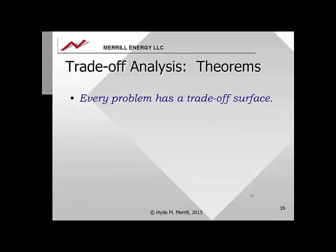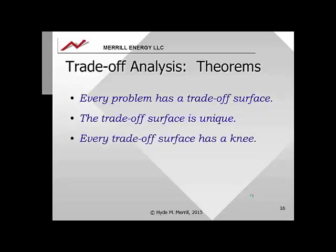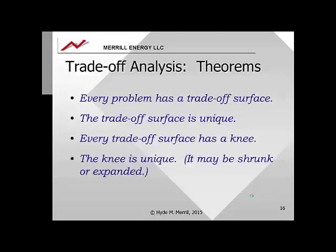There are four theorems proved with regard to trade-off analysis. First, every problem has a trade-off surface. Second, the trade-off surface is unique — it doesn't matter what order you sort through the pair-by-pair comparisons, you'll always come up with the same answer. Third, every trade-off surface has a knee (with some qualifiers on how you define the knee). Fourth, the knee is unique — you can make it bigger or smaller, but the knee itself is unique.